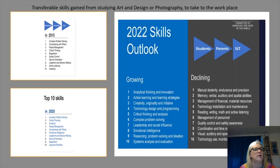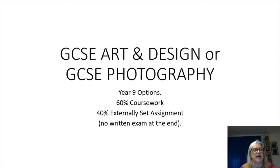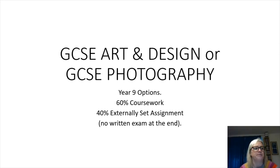So what do these courses look like? Both GCSE Photography and GCSE Art are made up of 60% coursework, which you start at the beginning of Year 10, and 40% externally set assignment.